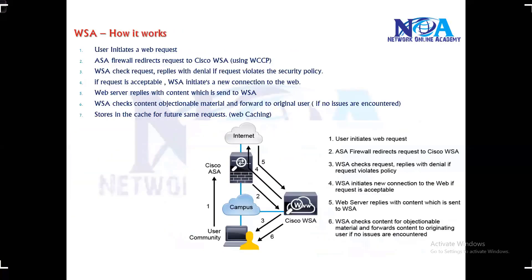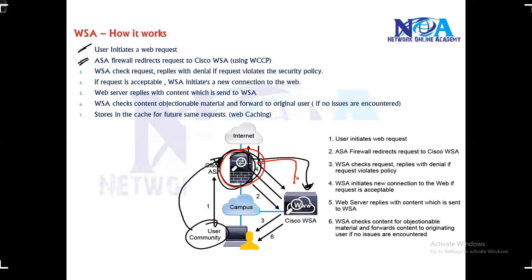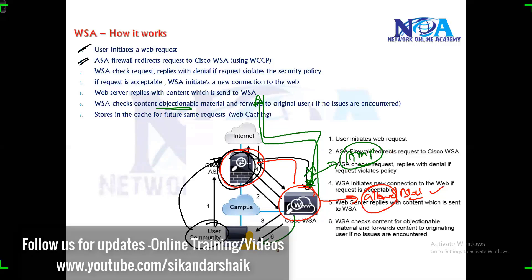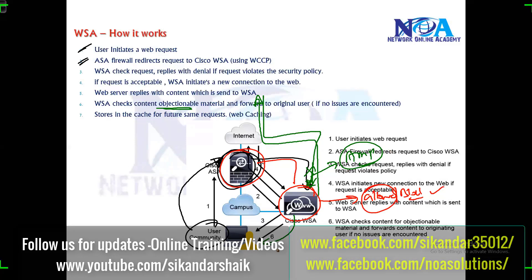So these are the six steps. To quickly summarize: the user initiates the request, the request goes to the gateway, the gateway redirects to the WSA. The WSA checks whether the request is allowed or blocked — if blocked, it blocks the connection; if allowed, it initiates a new request on behalf of the user. The server responds, and once the WSA receives the response, it checks for malware. If there is any objectionable material, it blocks it; if not, it sends the content back to the end user and caches it so that future requests for the same content are replied from the local cache.